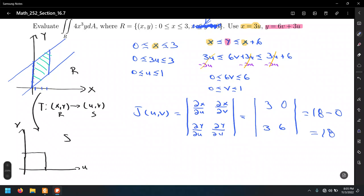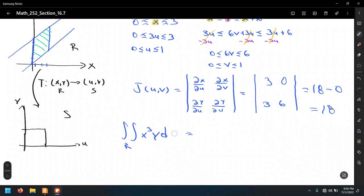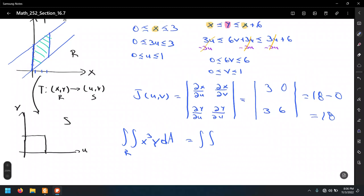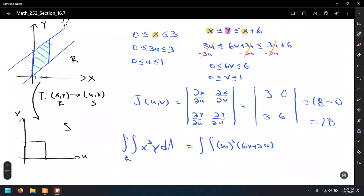I think we're ready to set up the integral. The double integral over the region R, x cubed y dA, will become the double integral over the new region. X in terms of u and v is 3u, so that's 3u cubed, and y, which is 6v plus 3u. And dA, which used to be dx dy, will become du dv.